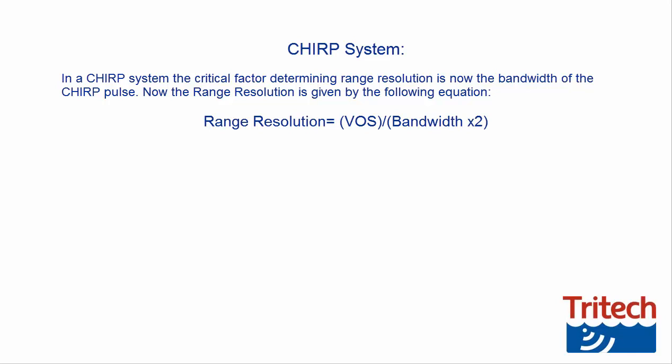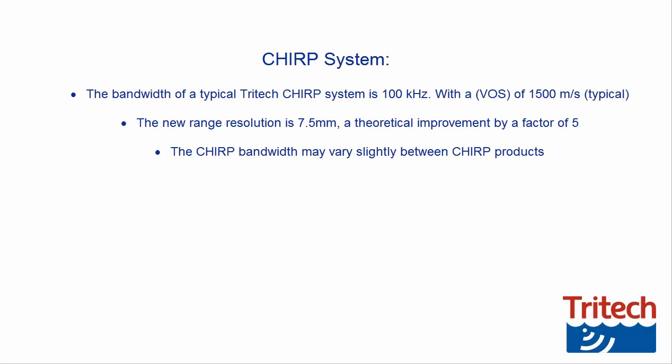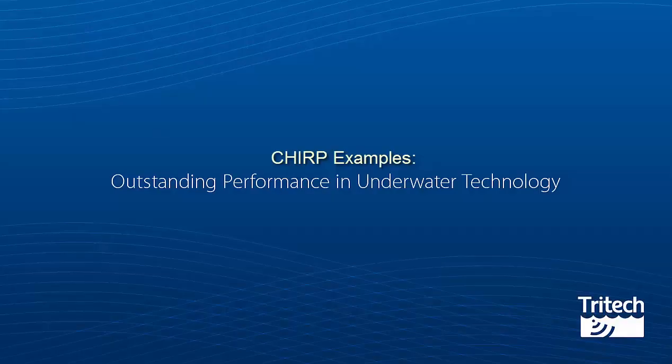Now the range resolution is given by the following equation. The bandwidth of a typical Tritec CHIRP system is 100 kHz, with a velocity of sound of 1500 meters per second typical. The new range resolution is 7.5 millimeters, a theoretical improvement by a factor of 5.